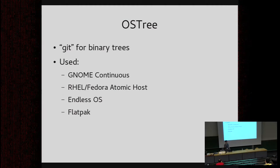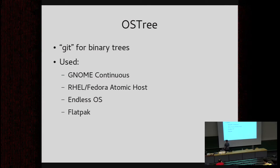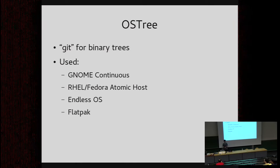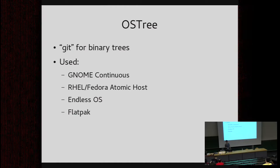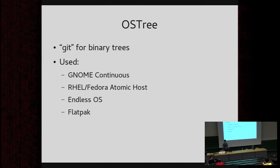Where is OSTree used? It's been used for a long time in GNOME Continuous, our test OS distribution that rebuilds every night when a change lands. It's used for Atomic Host, coming out of RHEL and Fedora, which is a lightweight OS for running containers on top of. It's used by Endless OS, and it's used internally in Flatpak — because if you have a tree of binary files, that makes sense not just for an OS but also for an application.